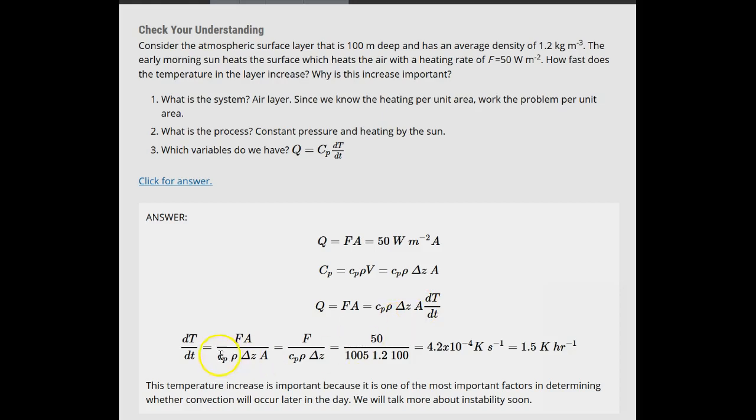We can rearrange this equation to get the temperature change per time dT/dt on the left and all the known variables on the right, and then we can put the numbers in and find out what the change in temperature with time is.